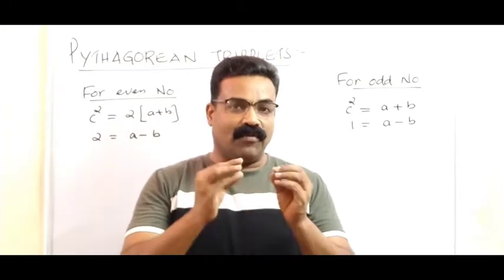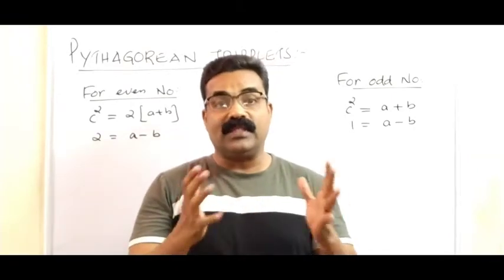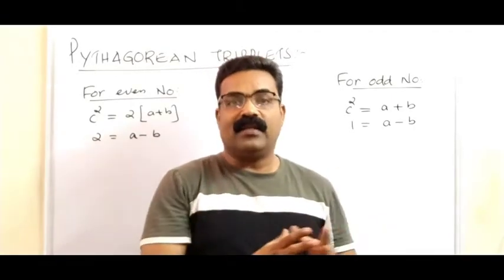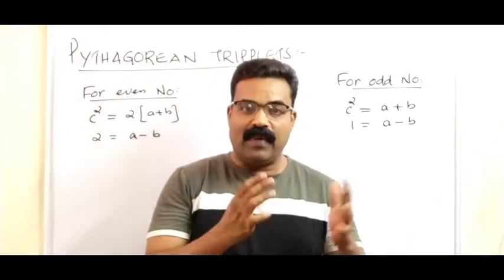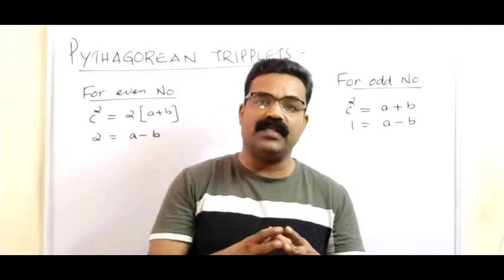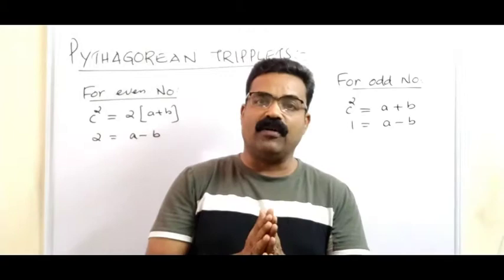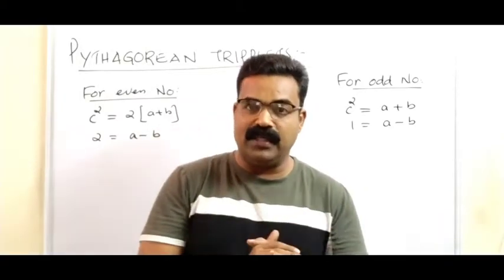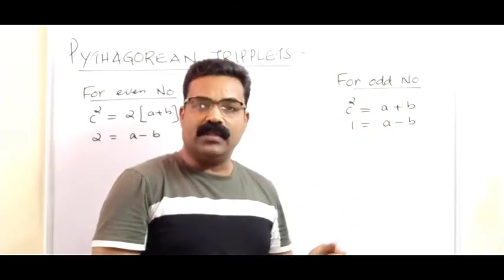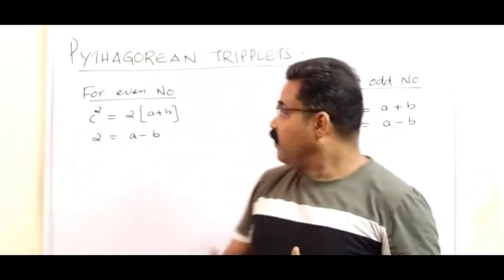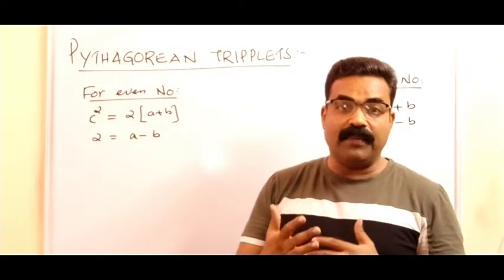If one number is given to you, you have to find the other two numbers which satisfy Pythagoras theorem — those are called Pythagorean triplets. A triplet means a group of three numbers. We have two different methods: the first method is when the given number is odd, and the second method is when the given number is even.